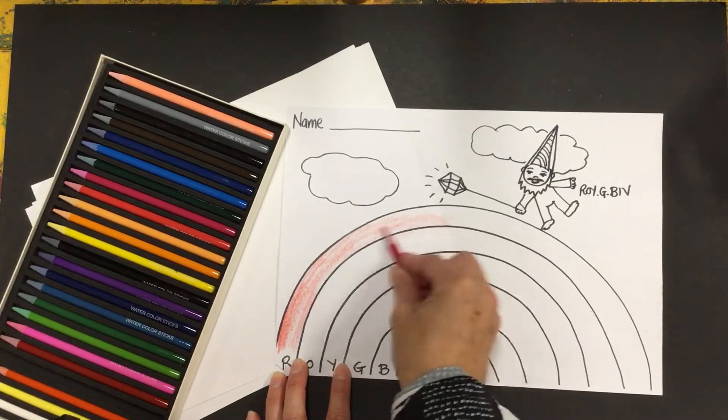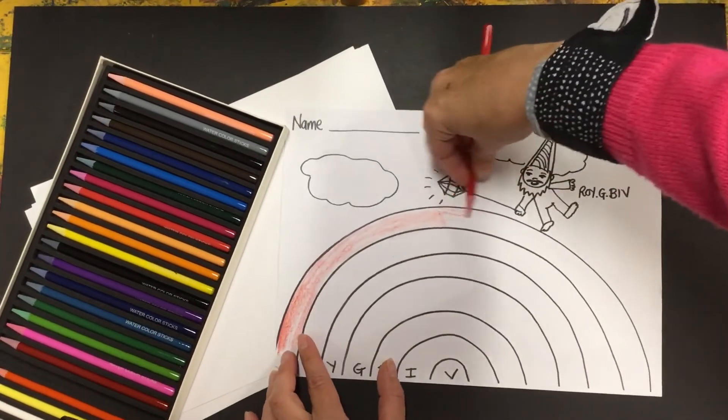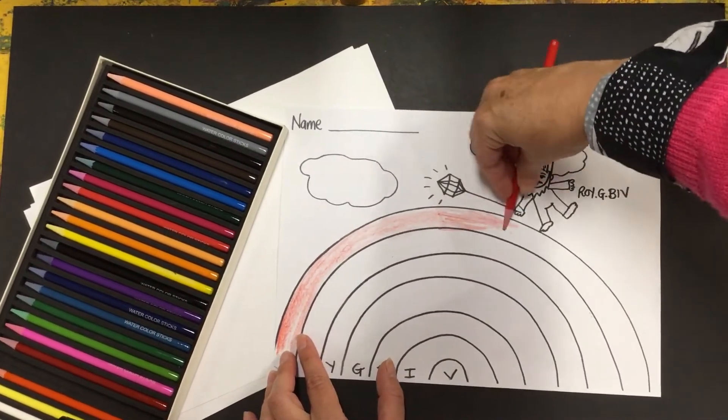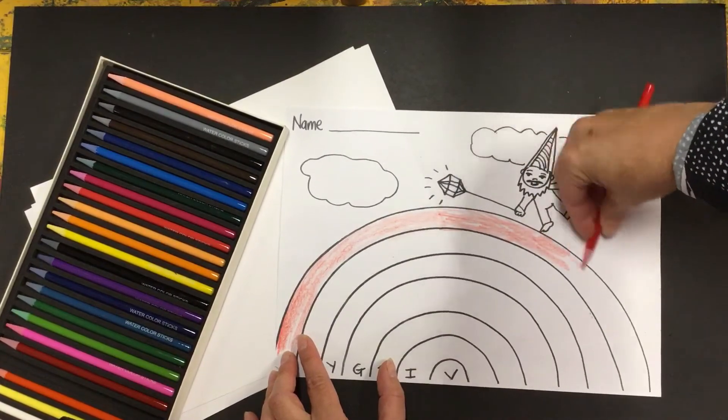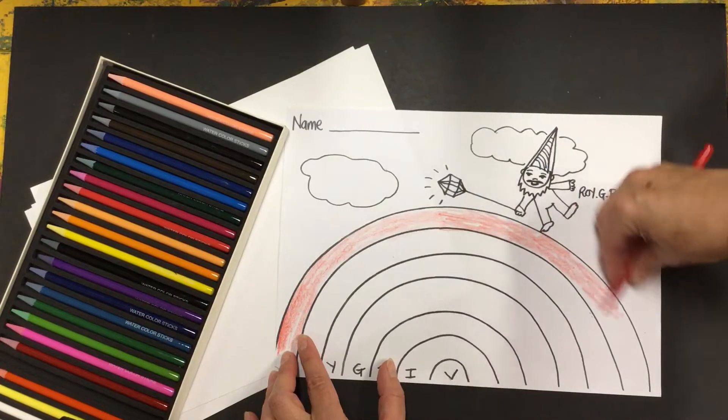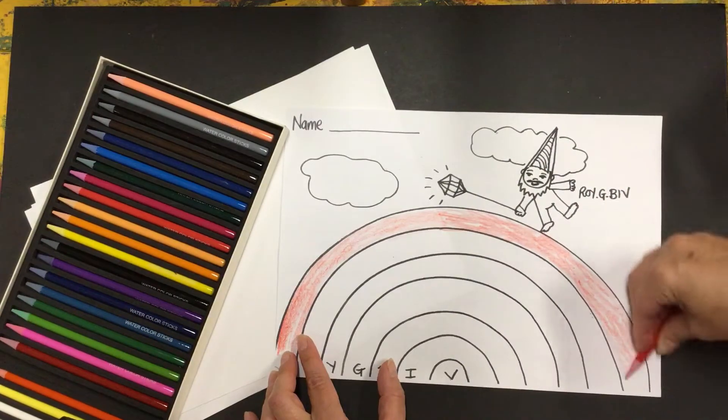I am super fast at coloring. You guys will probably take a little bit longer. Now I'm just going to do a half rainbow because it'll be really boring to watch me color in the whole rainbow.